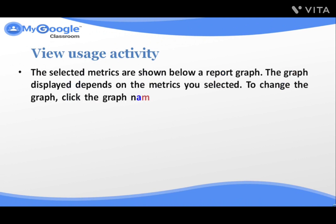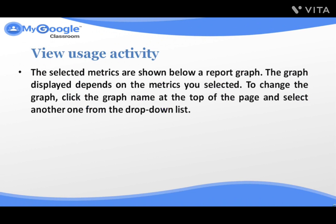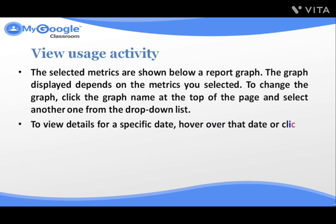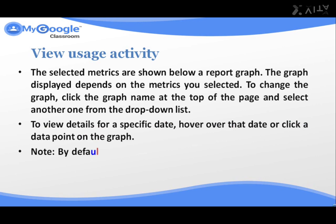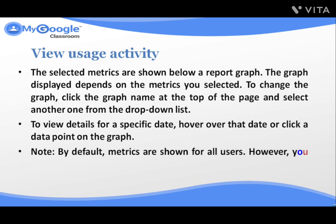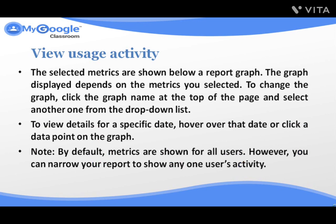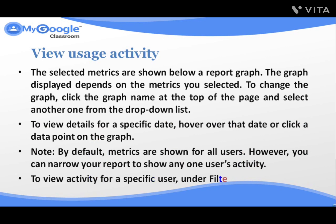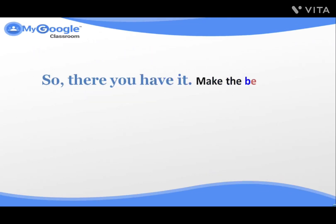To change the graph, click the graph name at the top of the page and select another one from the drop-down list. To view details for a specific date, hover over that date or click a data point on the graph. Note that by default, metrics are shown for all users. However, you can narrow your report to show any one user's activity. To view activity for a specific user, under filters, enter the user's name.